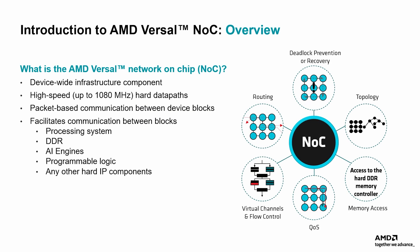The AMD Versal Network on Chip, or NOC, is a high-speed, scalable communication fabric that forms the backbone of data movement across the Versal architecture. It provides unified device-wide connectivity between all major IP endpoints, including the programmable logic, the processing system, hard IP blocks like DDR memory controllers, PCIe, and the AI engine array. It operates at up to 1080 MHz and uses packet-based communication, which allows for decoupled transactions and greater parallelism. The Versal architecture fundamentally differs from previous FPGA generations in that it requires all communication with hard DDR memory controllers to go through the NOC.